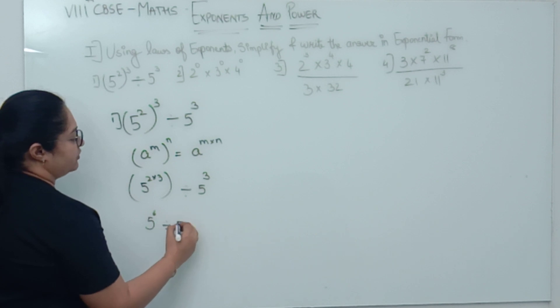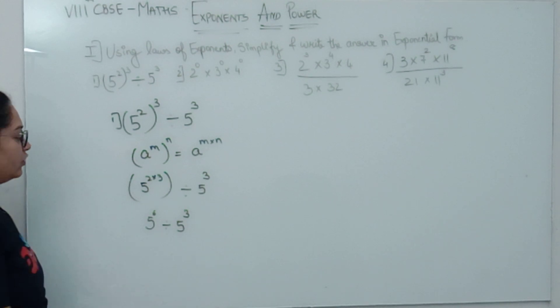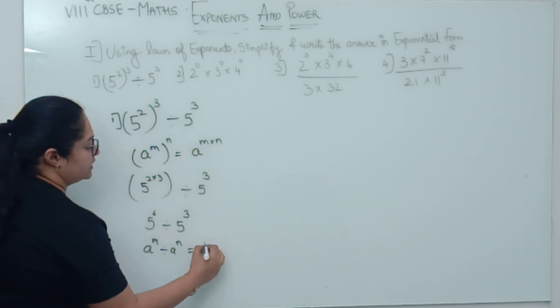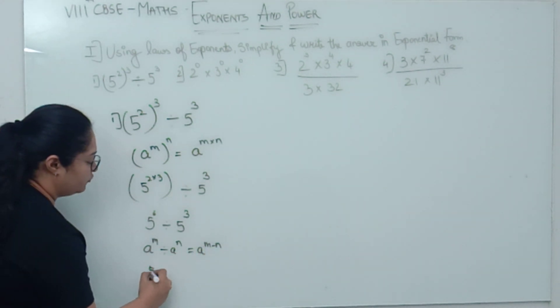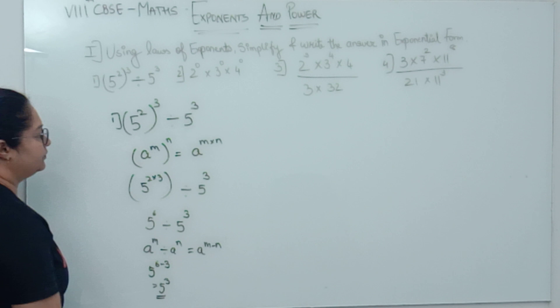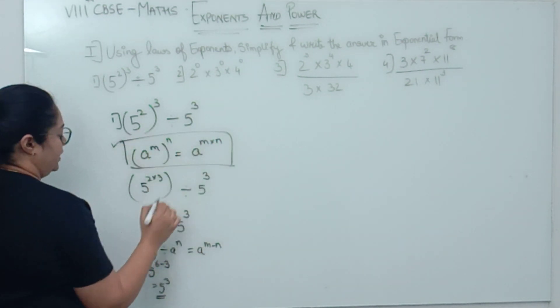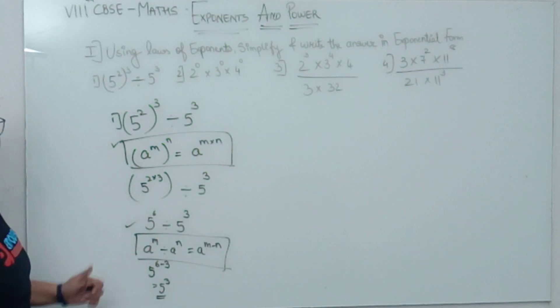Now, base same, power different, the second law, which says a raised to m divided by a raised to n will give you a raised to m minus n. So, what are you going to do? 5 raised to 6 minus 3 will give you 5 raised to 3. So here, you applied how many laws? Two laws. Law 1 and law 2. Understood the first sum?